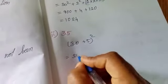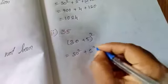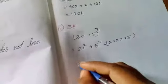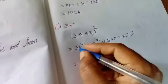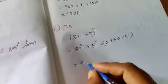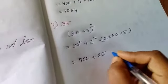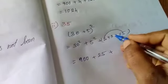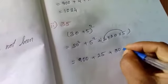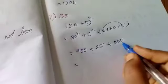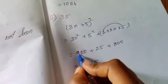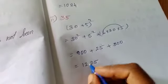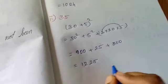Next, for 35: A is 30, B is 5. So we write (30 + 5)² = 30² + 5² + 2 × 30 × 5. Now 30² = 900, 5² = 25, and 2 × 30 × 5 = 300. Adding 900 + 25 + 300 gives us 1225 as the answer.